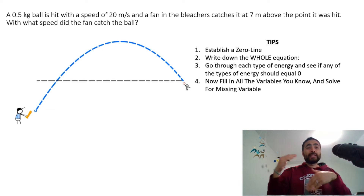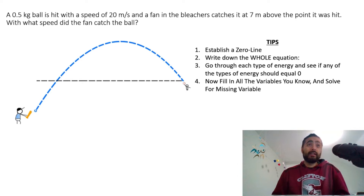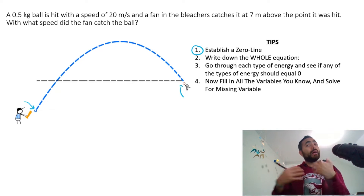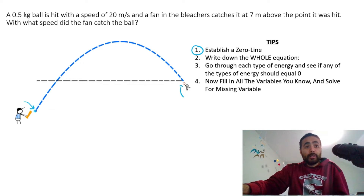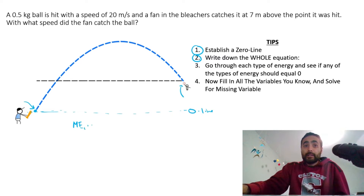Okay, let's look at this example — the examples are going to get harder and harder. A 0.5 kilogram ball is hit with a speed of 20 meters per second, and a fan in the bleachers catches it at seven meters above the point it was hit. With what speed did the fan catch the ball? The very beginning is where it was hit, and the fan catching the ball is the final state. Establish a zero line — the lowest point where the object is, is at the very beginning, so that's where we're making the zero line.